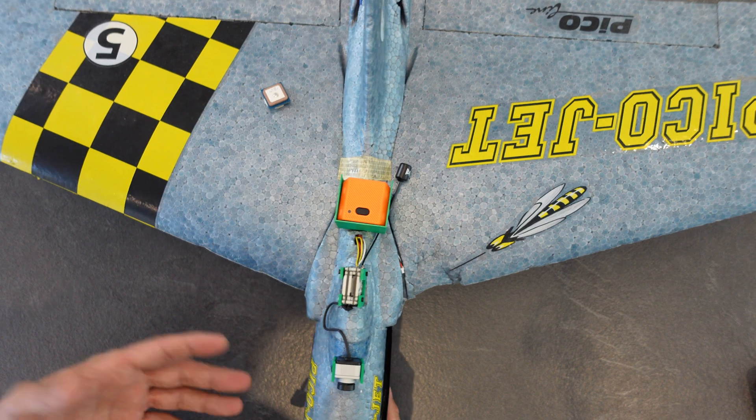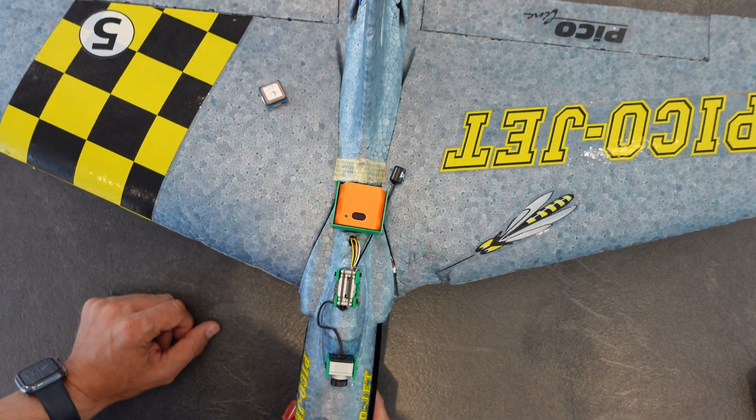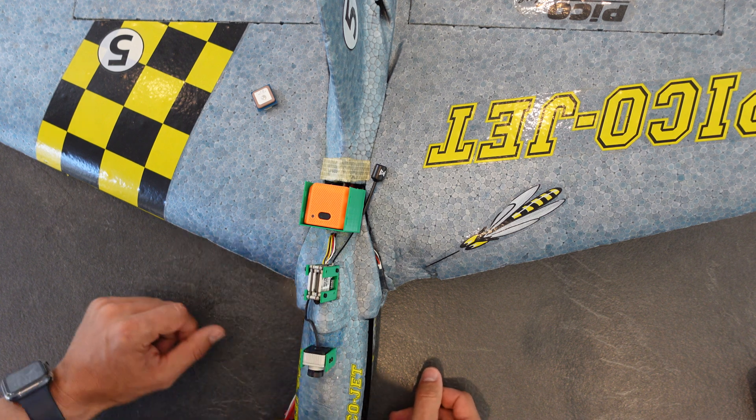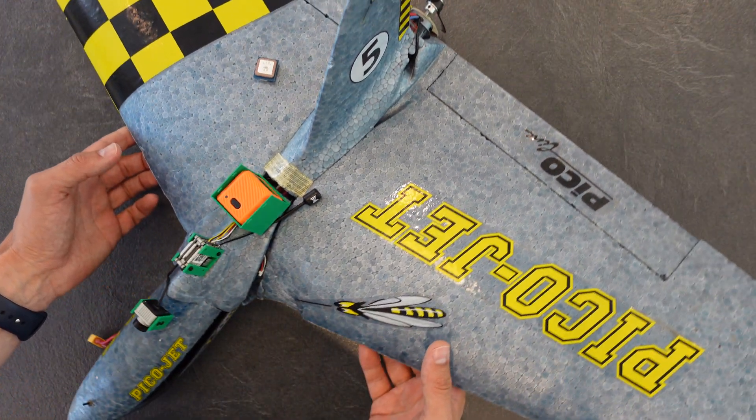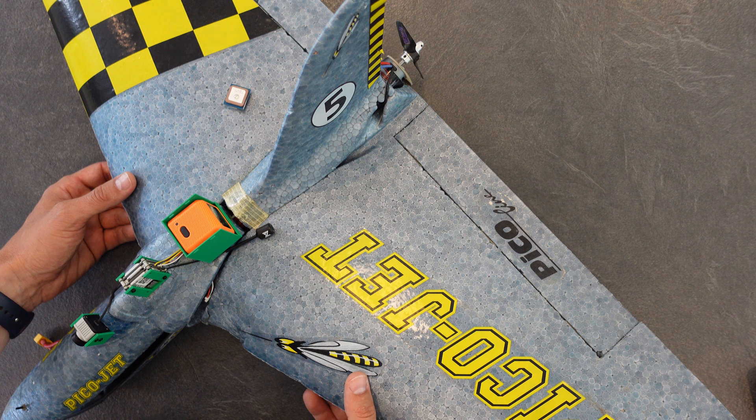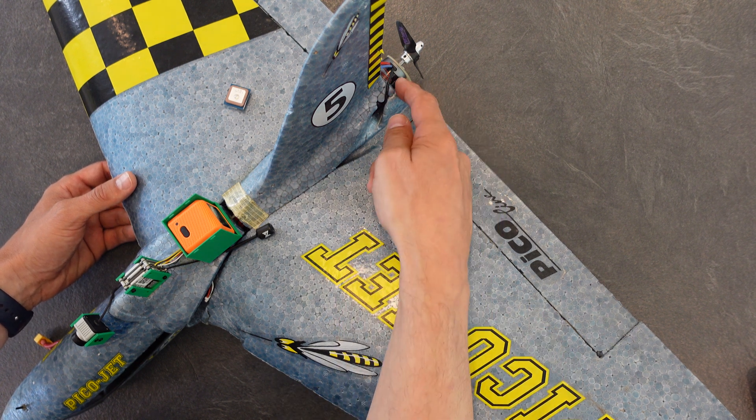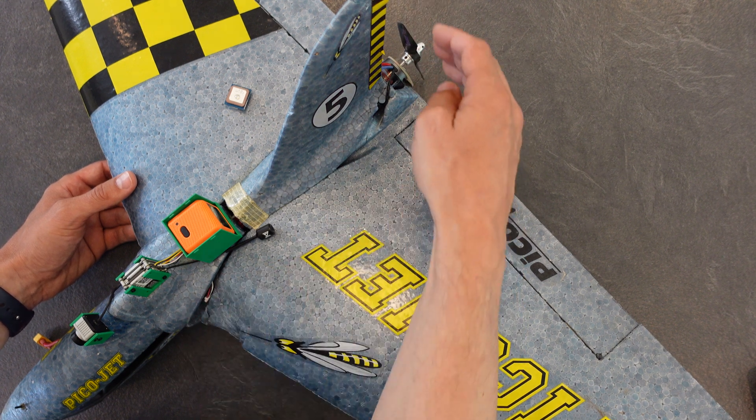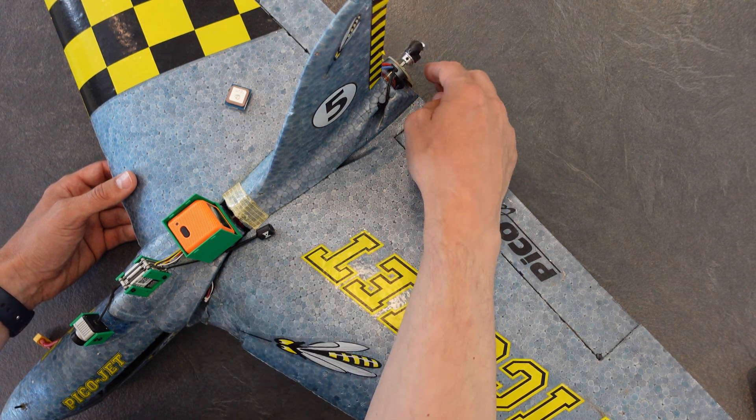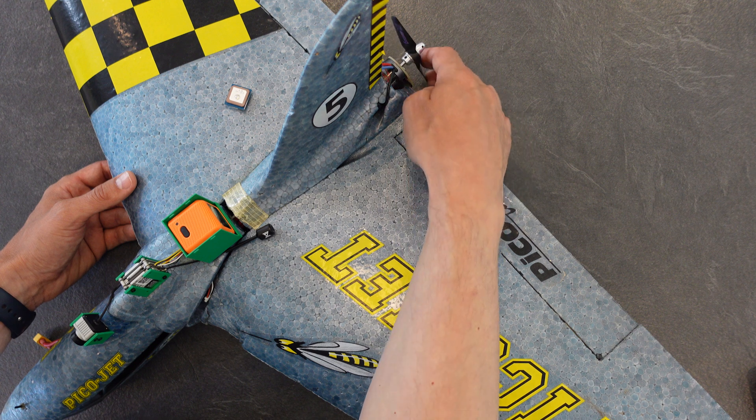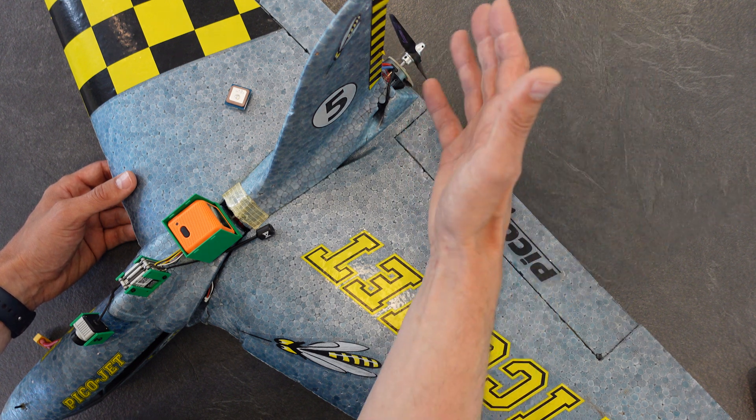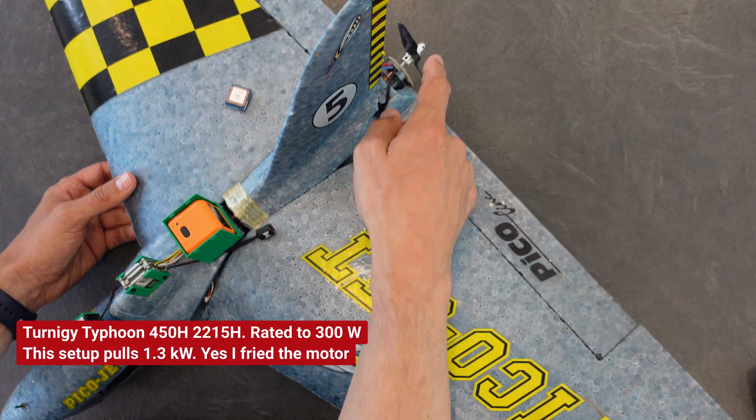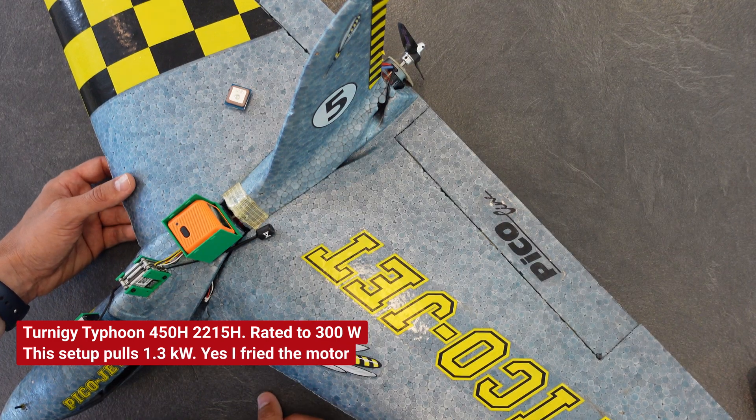The plane flew kind of well, kind of fast, but I definitely have some big issues. It flies faster than intended because this motor is much more powerful than the original that the engineers decided to use back in 1999. That was a Permax 400, 6 volts, 60 watts, something like that. This is pulling a lot more. I haven't measured it yet. I'm going to do that. I think this is pulling close to one kilowatt.